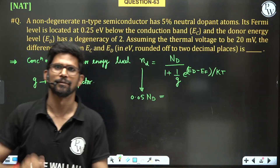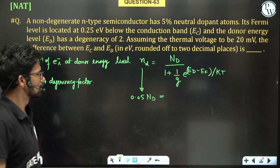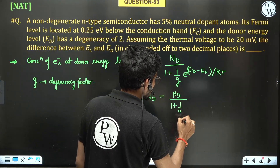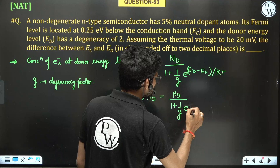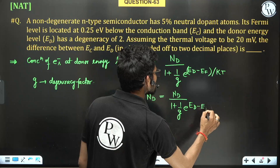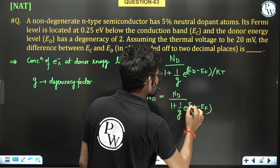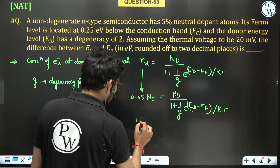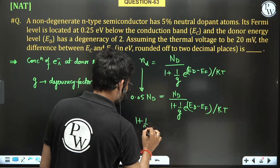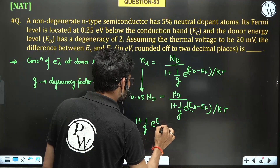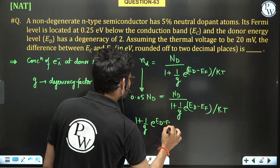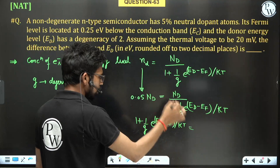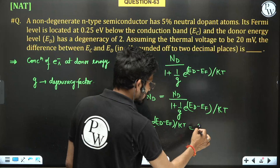Setting up the equation: 0.05·ND equals ND divided by 1 plus (1/G)·e to the power (ED minus EF) upon KT. ND cancels out, giving 1 plus (1/G)·e to the power (ED minus EF)/KT equals 1/0.05, which is 20.